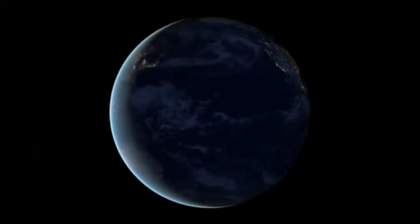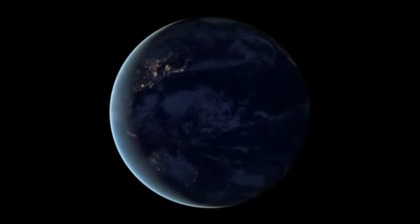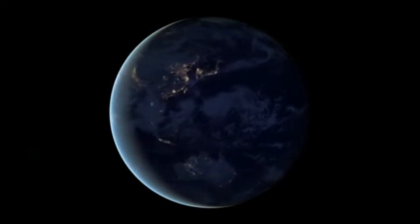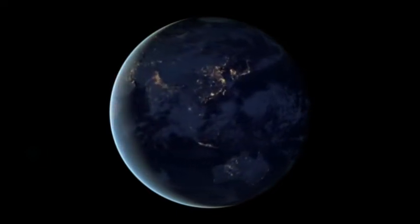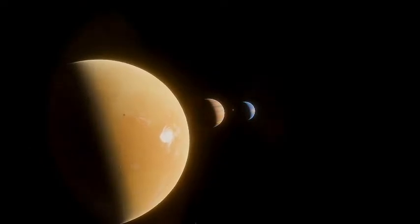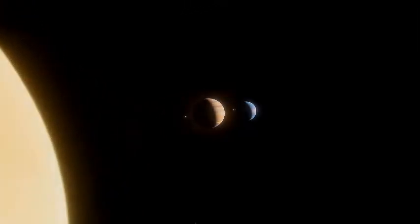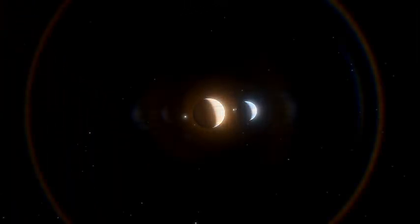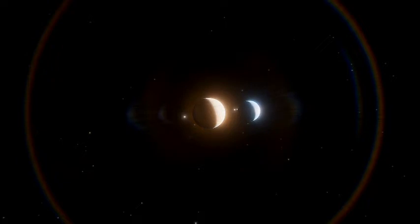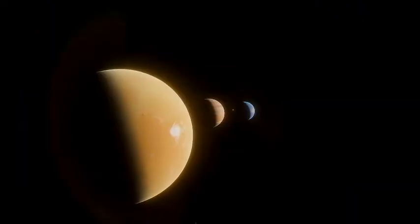When Earth formed, it was nothing but a group of rocks that came together due to gravity. At that time, lava was flowing through Earth like today's water. Earth had lava pools and lava oceans - you can call that time a real hell.